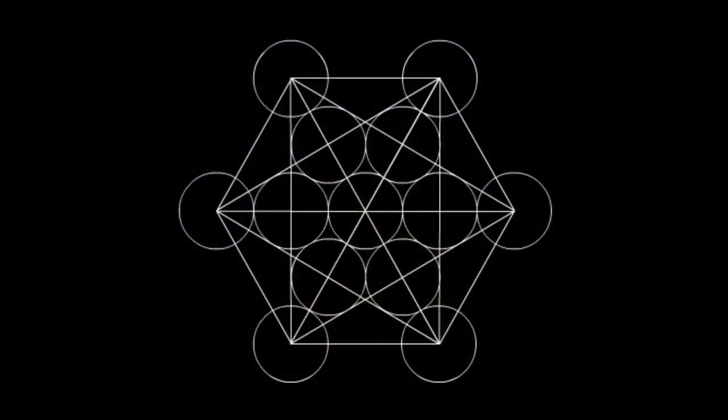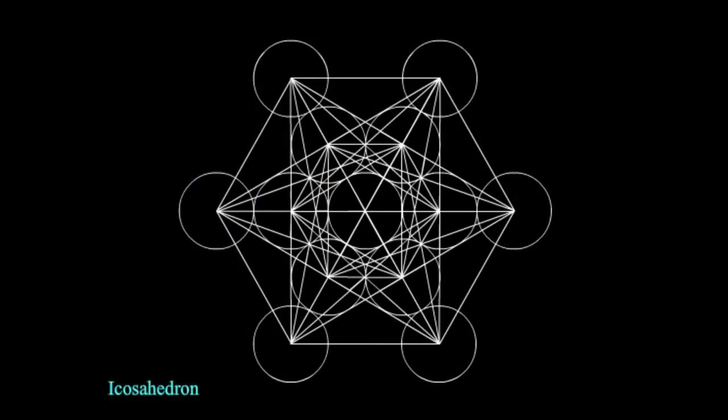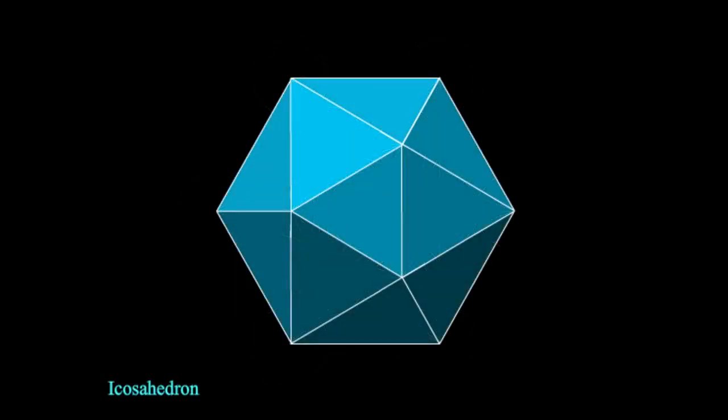So moving on, the next shape we have here is called the icosahedron. The icosahedron is a shape that represents nurture, the emotions, and is also associated with the element of water. In fact, this is the structure that's mapped across the planet that creates what's the original ley line structure.